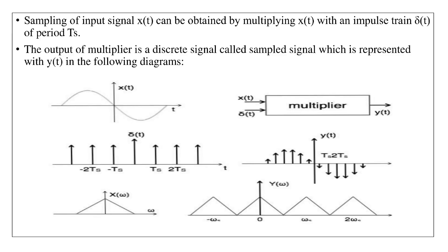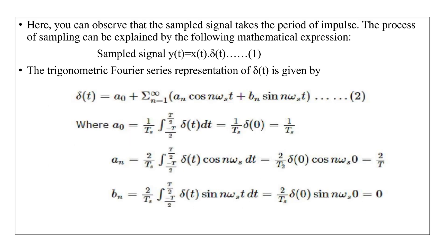Sampling of input signal x(t) can be obtained by multiplying x(t) with an impulse train δ(t) of period Ts. The output of multiplier is a discrete signal called sampled signal, which is represented with y(t) in the following diagrams.